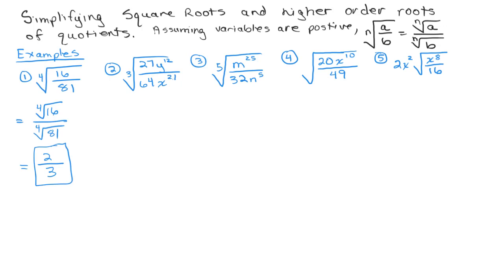For the second problem, we're going to do this again, except we have a cube root. So we're going to do the cube root of the numerator, the cube root of 27y to the 12th, over the cube root of 64x to the 21st. Alright, so 27 is a perfect cube. The cube root of 27 is 3, and the cube root of y to the 12th, remember, you could just divide 3 into 12. If that goes in evenly, that will be your new exponent. So that will be y to the fourth. So I have 3y to the fourth in the numerator.